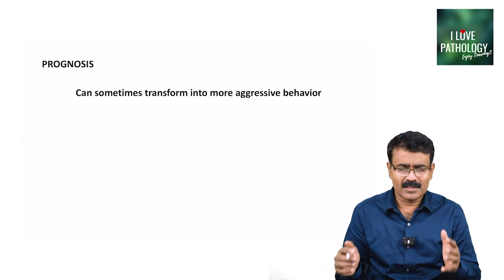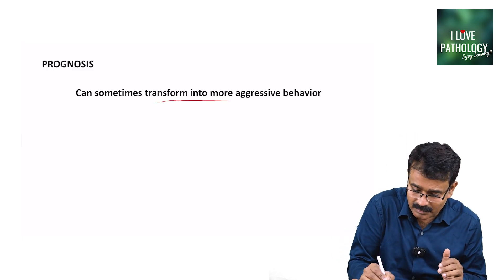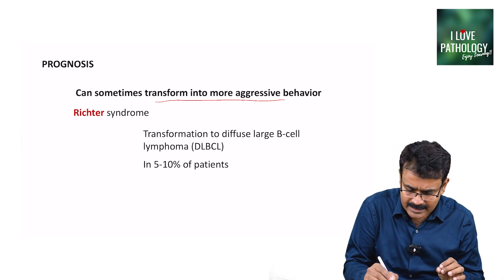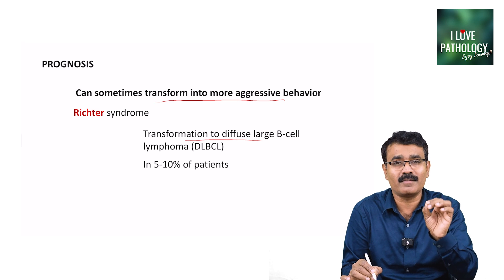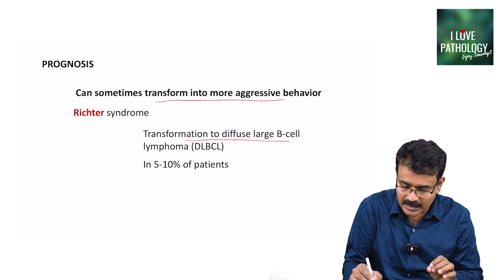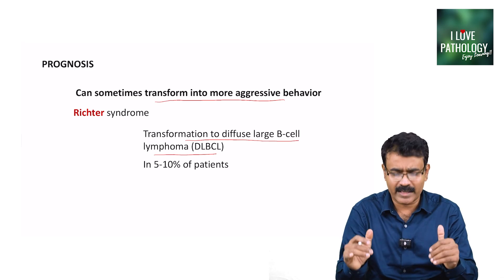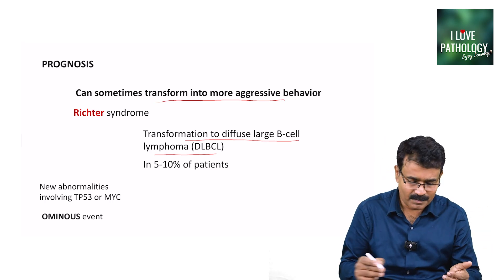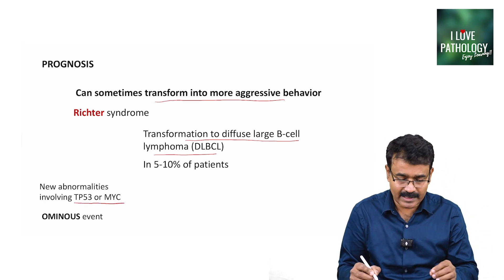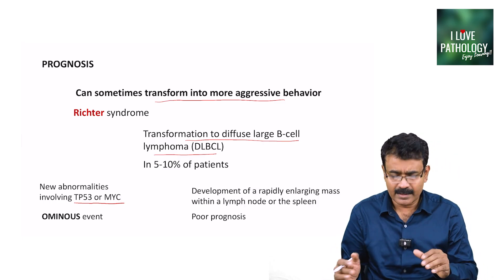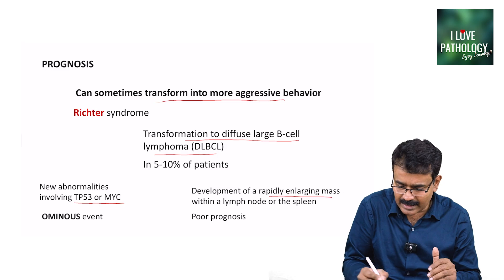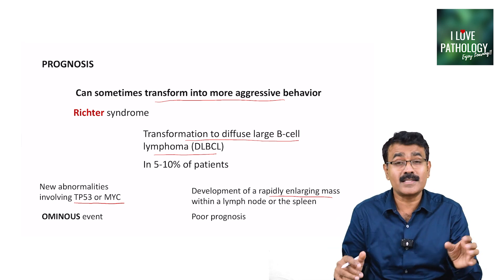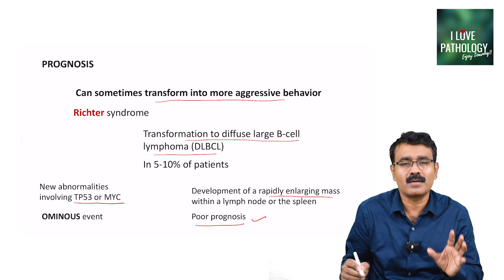Sometimes, CLL can transform into a more aggressive behavior — this is called Richter's syndrome. It is the transformation of SLL into a diffuse large B-cell lymphoma, occurring in around 5 to 10 percent of cases. This is caused by additional mutations predominantly involving TP53 or MYC genes. It is an ominous event characterized by rapidly enlarging masses within a lymph node or spleen, and carries a very poor prognosis.